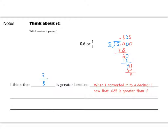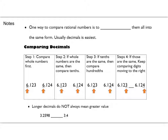One way to compare rational numbers is to convert them all into the same form. Usually decimals is easiest, and that's what I did on the last problem. But let's think a little bit about comparing decimals, because that can be a little tricky.